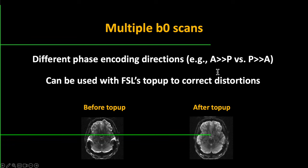What you'll notice with the data we're working with today is you have one scan which is really your main diffusion scan — five or ten minutes, with different B values. It has maybe one or two B0 images in the anterior to posterior direction. These axial images look a little bit smeared and distorted. If the phase encoding is anterior to posterior, it's almost like the brain is smeared from front to back. If it's posterior to anterior, the brain is smeared going forward. In either case, the data is distorted.